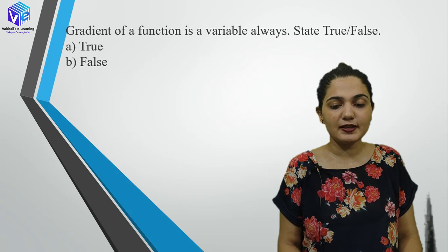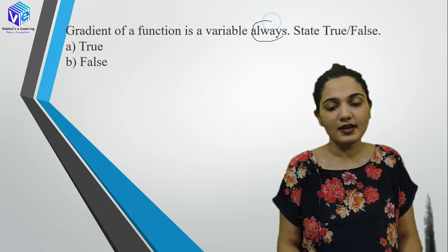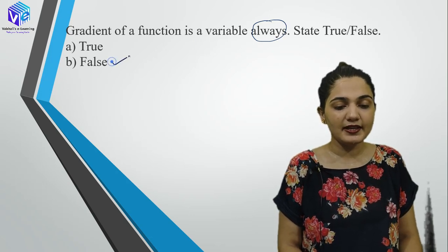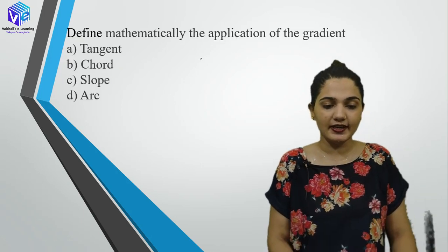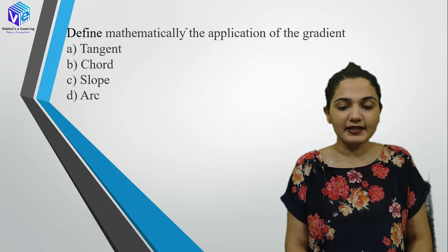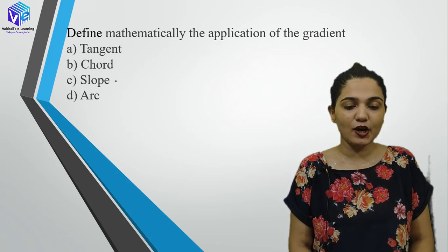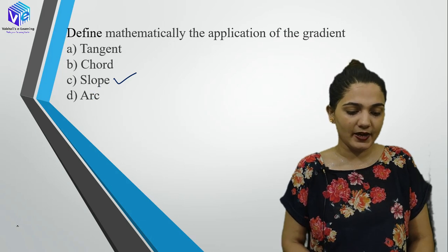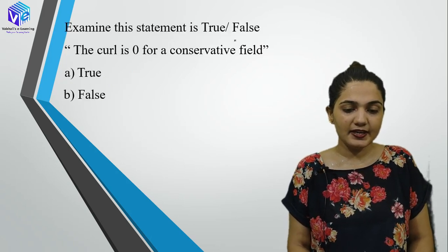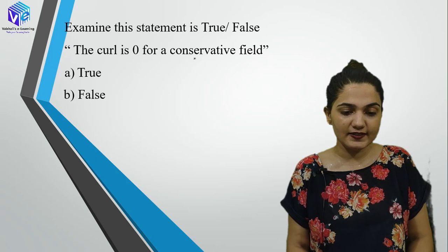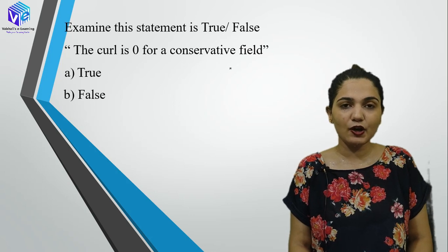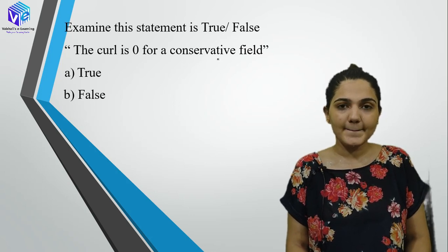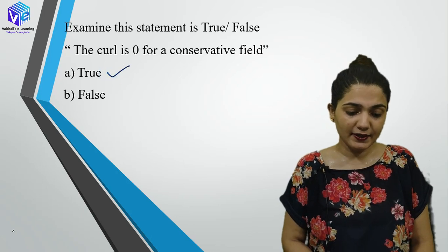Gradient of a function is always a variable — again 'always' appears — this is false, because gradient can sometimes be a constant, as we've seen in examples. Define mathematically the application of gradient: gradient is used to find the slope of a function. Also: the curl is zero for a conservative field — this is true.